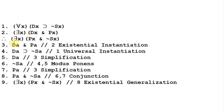Let's take a look at how this argument works. We have our premises and the conclusion we want to prove. First, we use the rule of existential instantiation to get 'DA and PA' on line 3. Then on line 4, we use universal instantiation to get 'if DA, then not SA.' You might wonder: could we have done this in the opposite order? If we had used universal instantiation first, the name A would no longer be available for existential instantiation. There is a restriction on existential instantiation: whenever we use it, we have to use it with a new name.